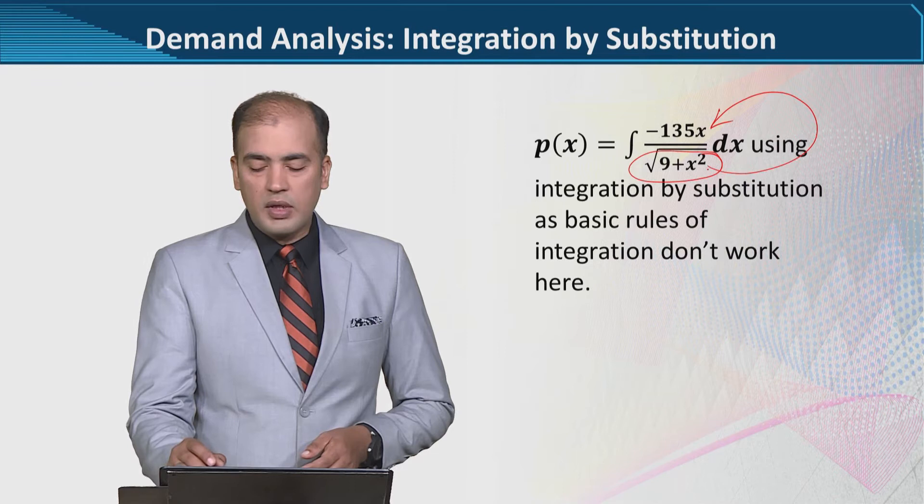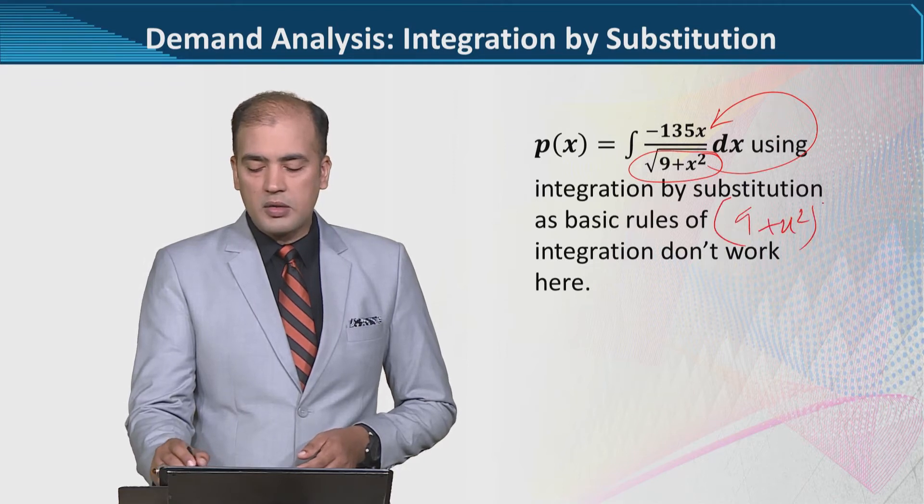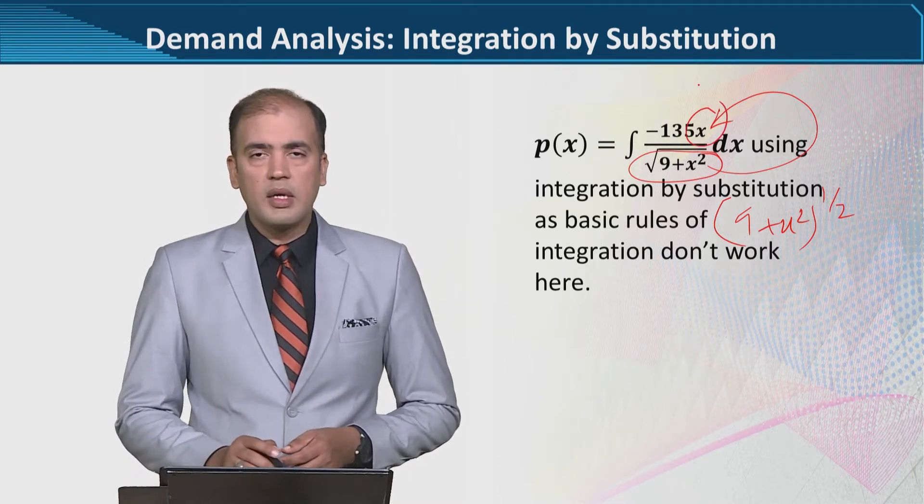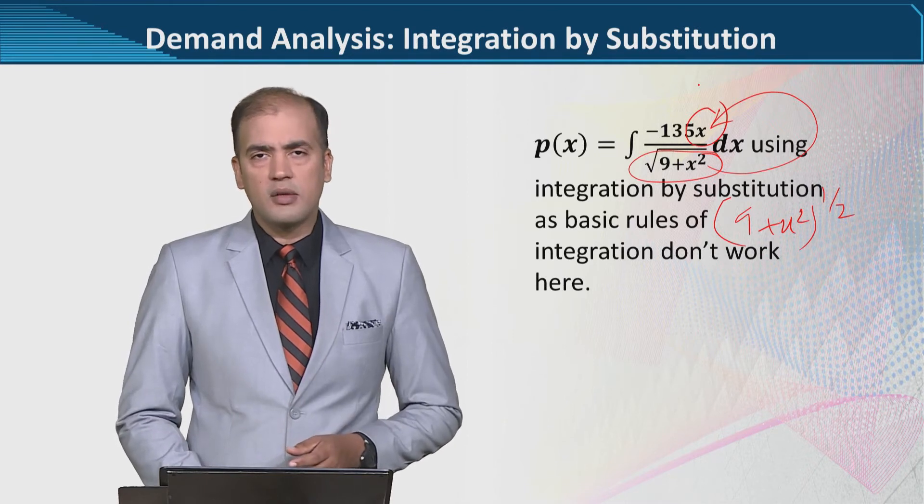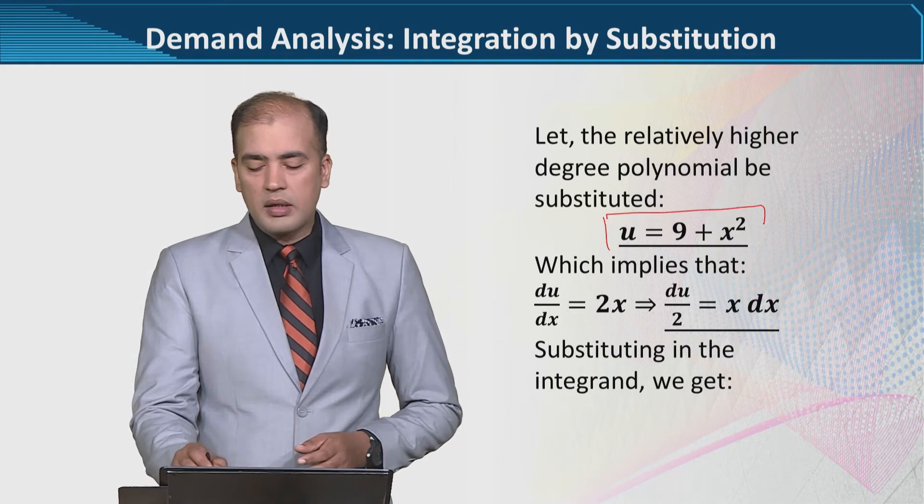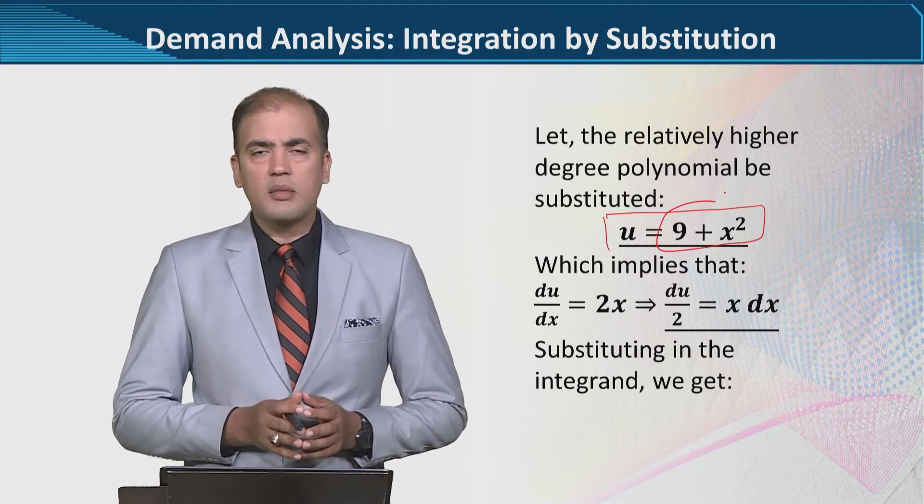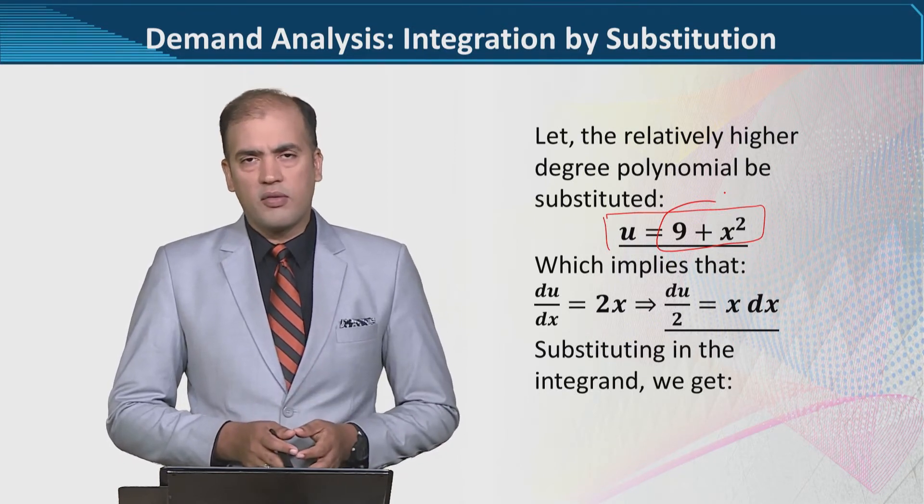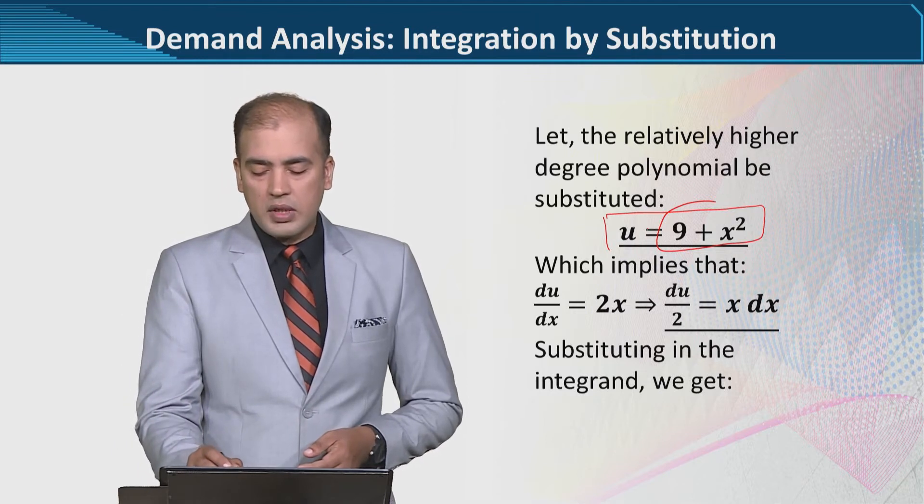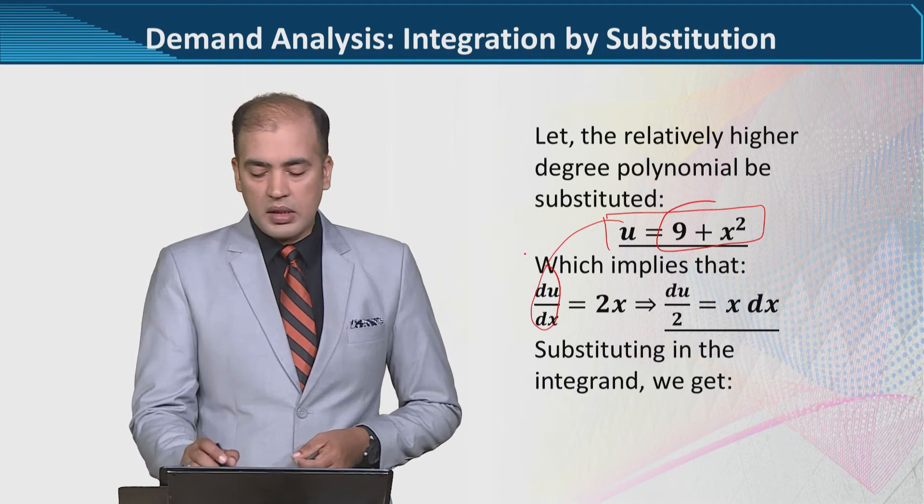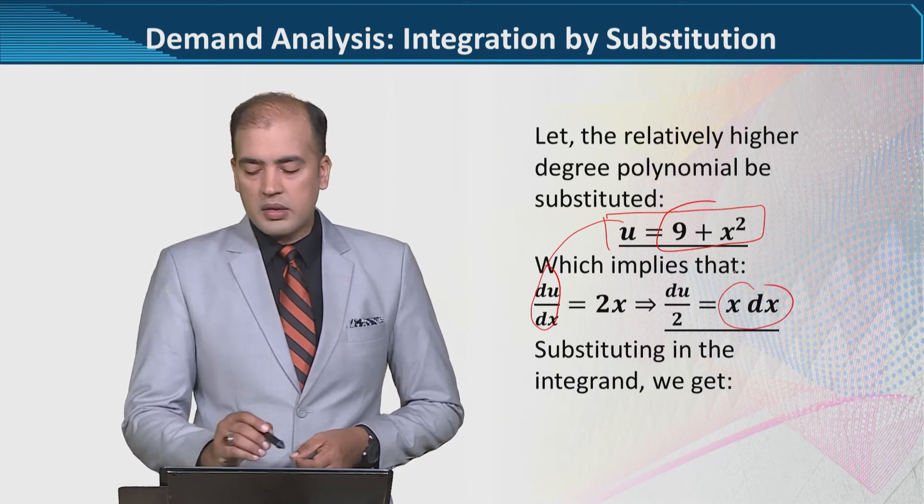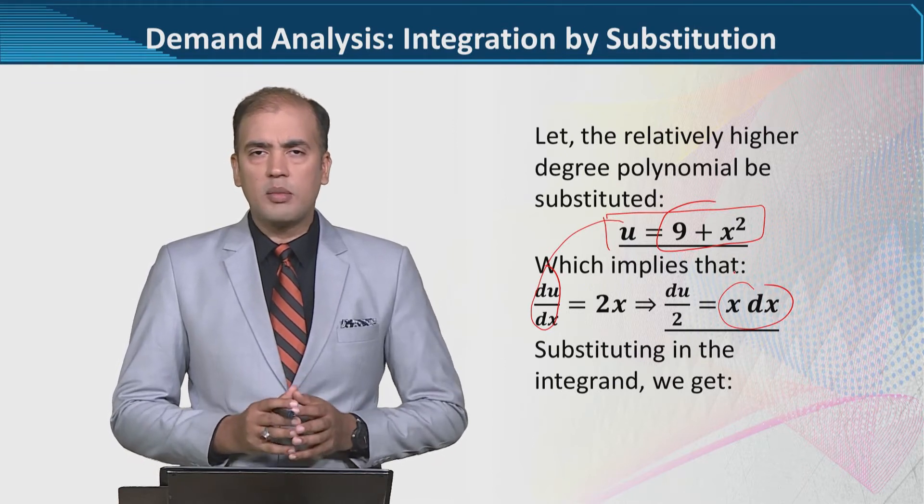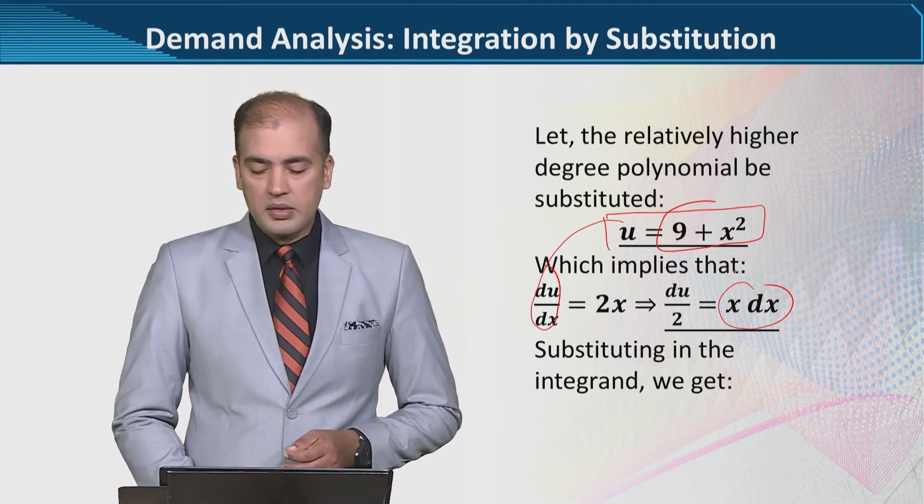What we can see here is that the derivative over function rule cannot be applied, because its derivative will not have the same degree as the numerator. When the whole power becomes 1 over 2, and we take its derivative, it's not likely to become x raised to power 1. Therefore, integration by substitution is necessary. The higher power expression or function is assumed equal to u, then we calculate its derivative so we can find it in the given function.